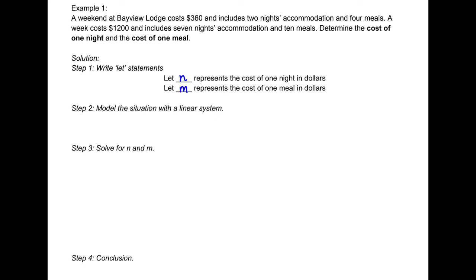Based on the first sentence, we know two nights accommodation, which is 2N, plus four meals is going to equal $360. The second sentence tells us seven nights plus 10 meals is going to equal $1,200.